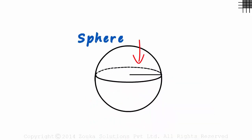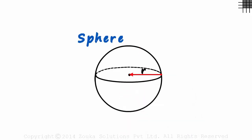The dotted portion is what cannot be seen from the front view. And this is the center of the sphere. And let R be its radius.